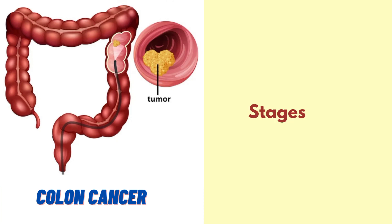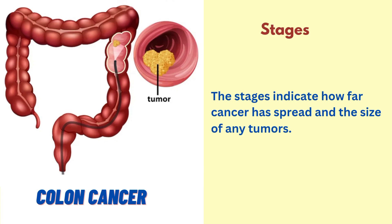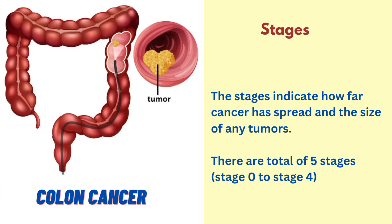Now, let's discuss about the stages of colon cancer. The stages indicate how far the cancer has spread and the size of any tumors. There are a total of 5 stages, stage 0 to stage 4.